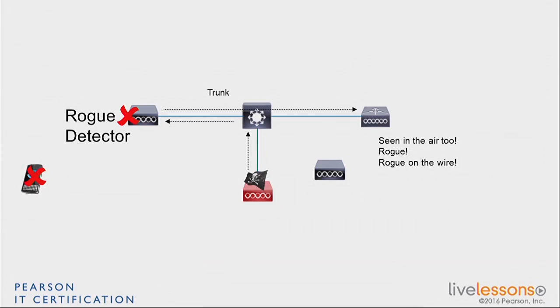If the answer is yes, then we know that the AP is seen in the air and on the switch. So that AP that doesn't belong to us, that rogue, is not only there, but it's connecting to our network. So that is a big alarm. That's the rogue detector. The rogue detector doesn't use its radio. It's a detection on the switch.